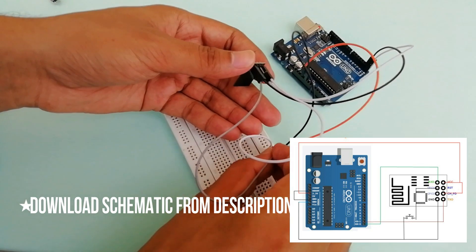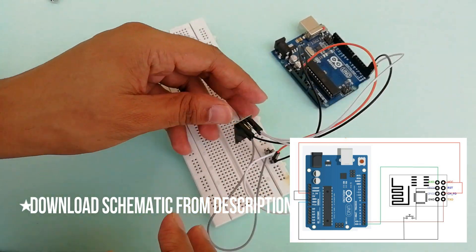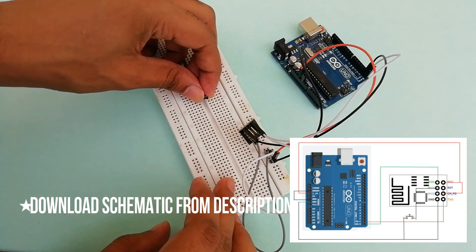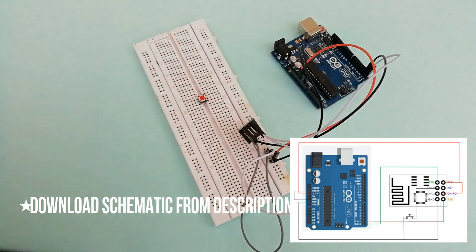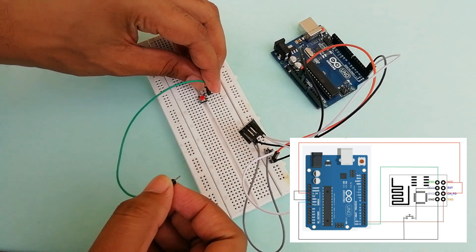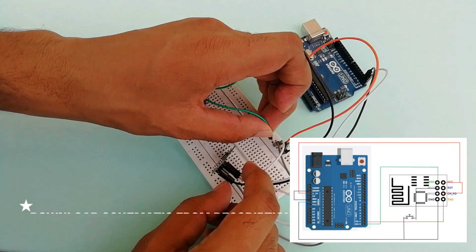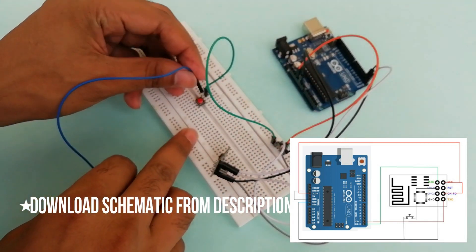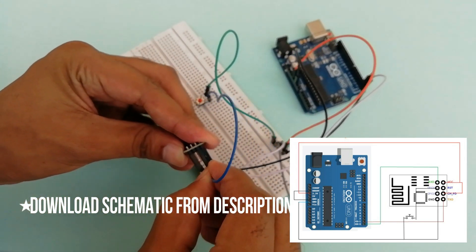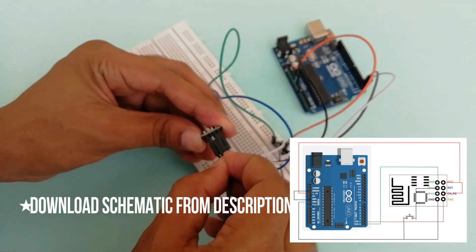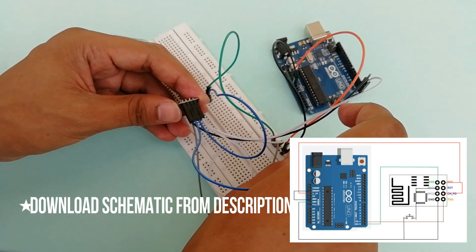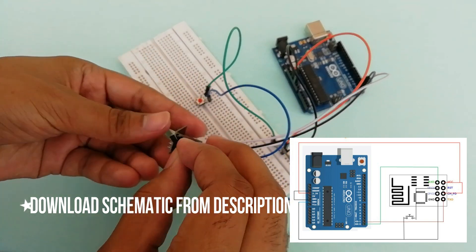Next important thing to remember is that the ESP8266 Wi-Fi module has two modes of operation: programming mode and normal mode. In programming mode we can upload the program or firmware to the ESP8266 module. In normal mode, the uploaded program or firmware will run normally. In order to enable the programming mode, the GPIO 0 pin must be connected to ground.